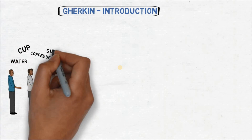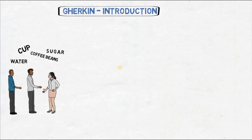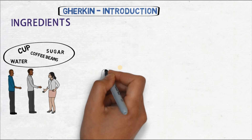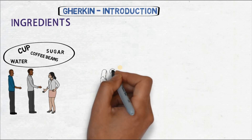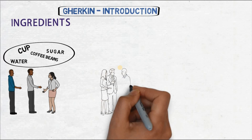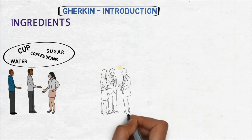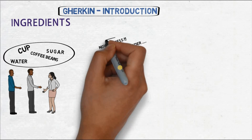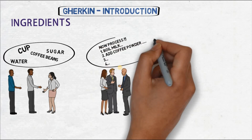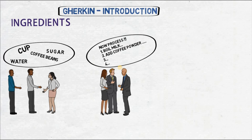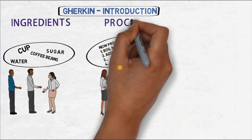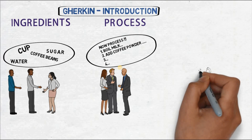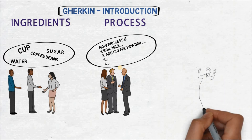Once the ingredients are ready, the process begins. We have all the ingredients in hand — now we need to make the coffee. The process includes steps like boiling milk and adding coffee powder. Another team focuses on defining this process. I term this step 'process.'